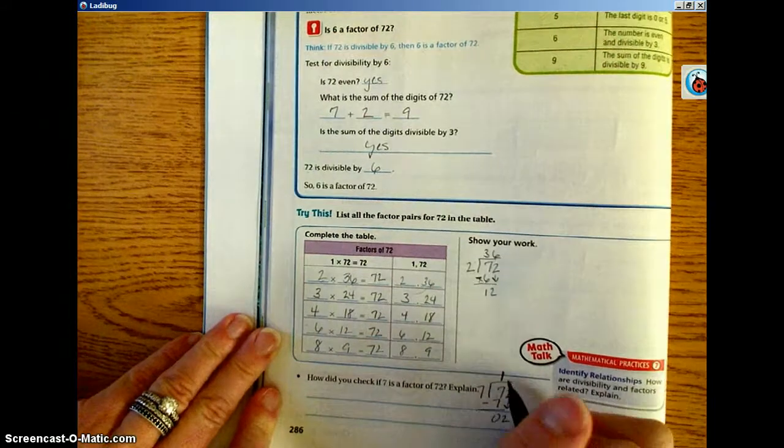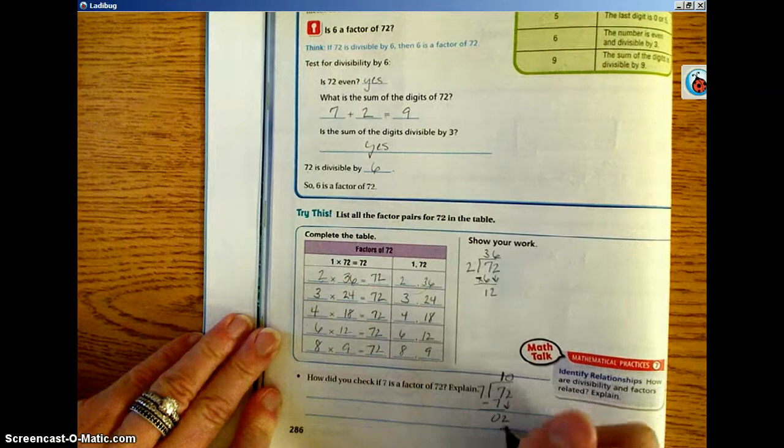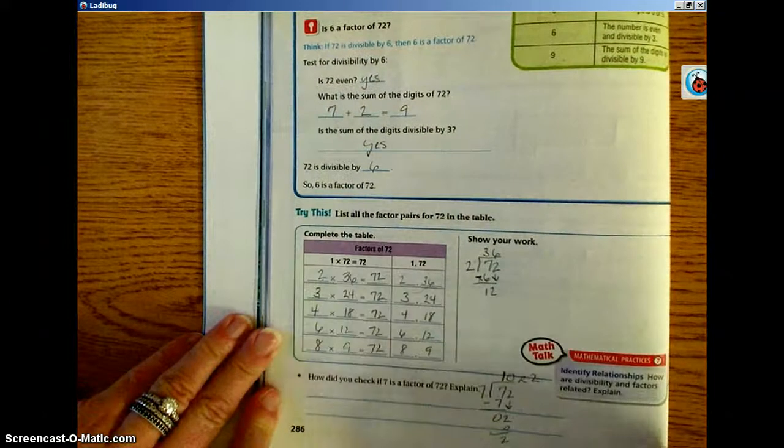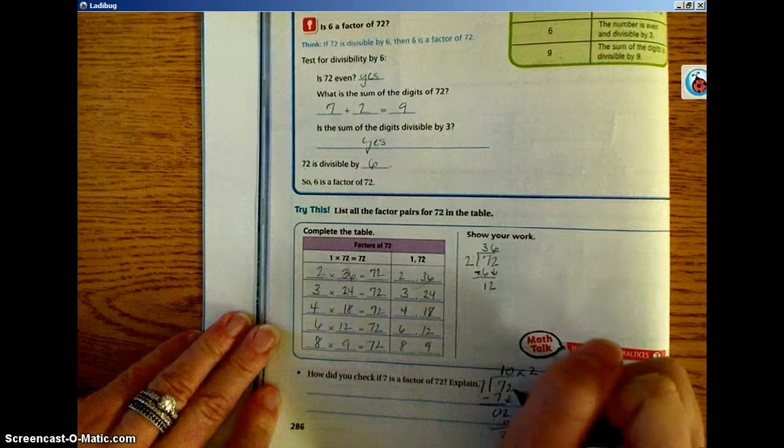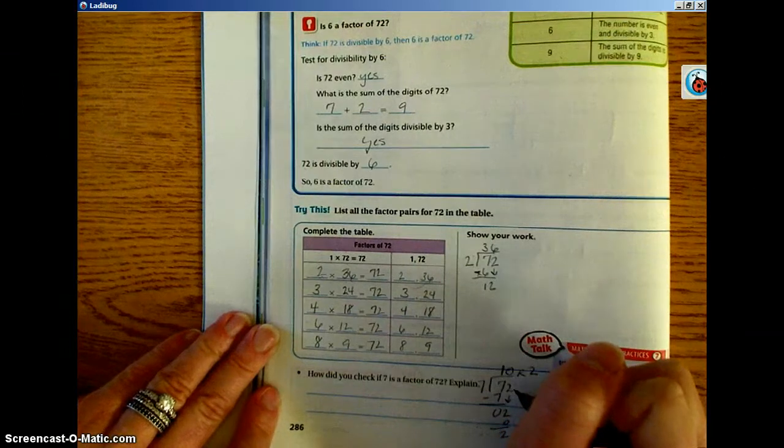7 will not go into 2, so it's a 0. 0 times 7 is 0. We're left with a remainder of 2. Since we have a remainder, 7 is not a factor of 72.